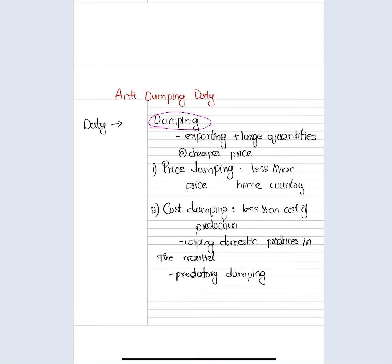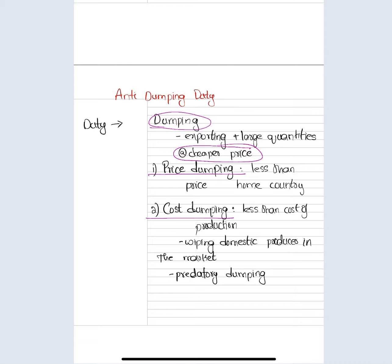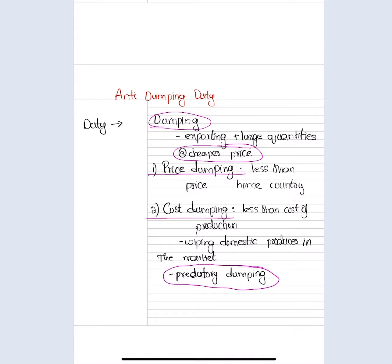Dumping is exporting large quantities of products to a foreign country at a cheaper price. Based on whether it is the selling price or cost price, it is divided into price dumping or cost dumping. If China is exporting to India at a price less than its selling price in China, it is called price dumping. But if it is exporting at a price less than the production or factory cost price, it is called cost dumping, which is also known as predatory dumping. One of the main goals is to wipe out domestic producers.